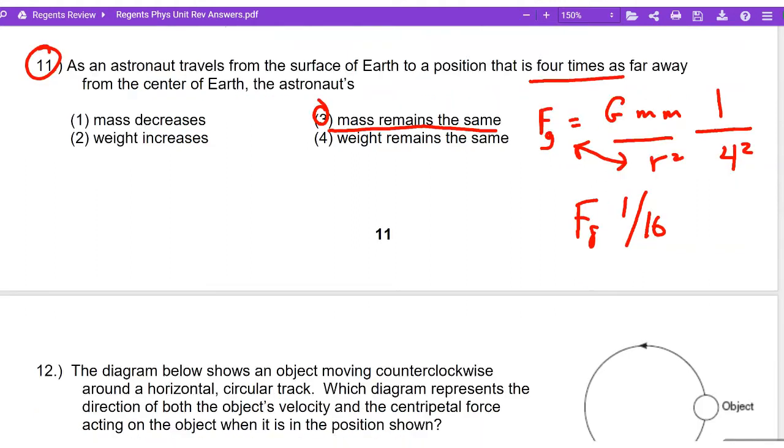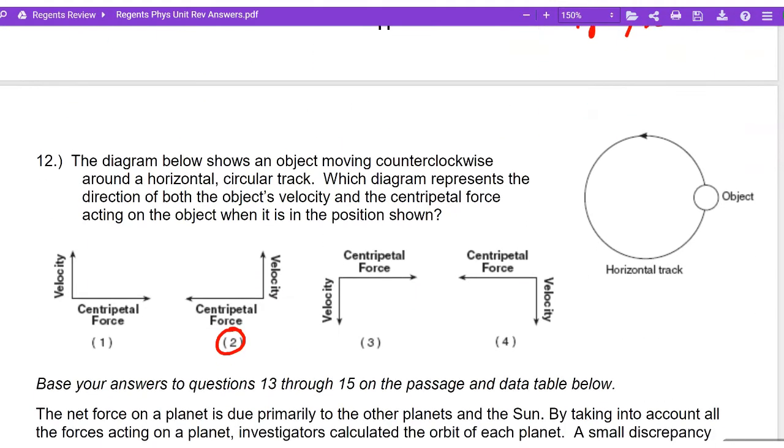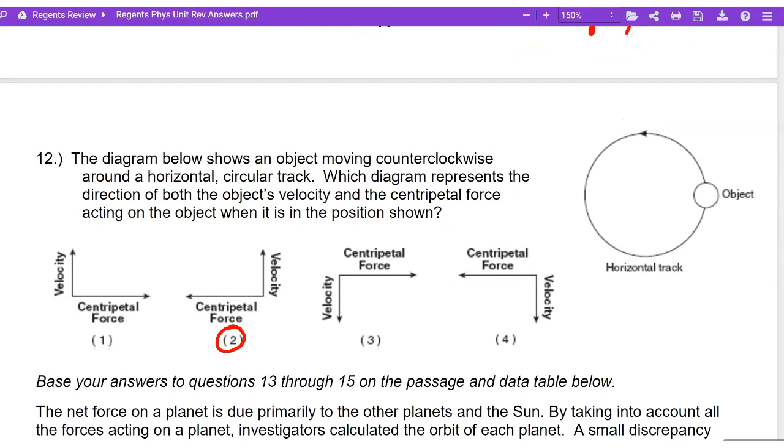Here's another question about an object going in a circle, where the force is always, and the acceleration is always centripetal, and the velocity is always tangential, and this angle's always 90 degrees.